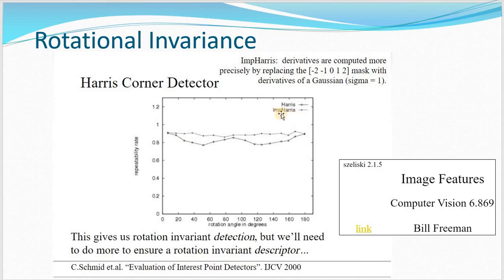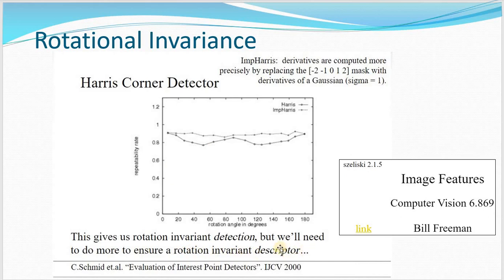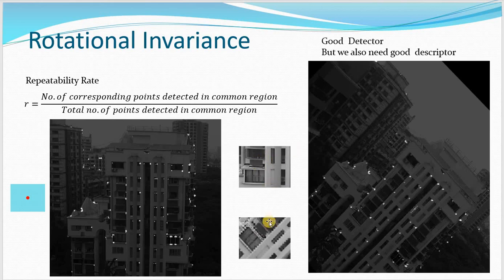There is also an improvised Harris detector. In improvised Harris, instead of using the normal Sobel edge detector, you use Gaussian derivatives — a mask with derivatives of Gaussian having sigma 1 — and that gives a better result. For improvised Harris the results are even more than 85% for most angles. However, this shows that while detection is rotationally invariant, you still need a rotationally invariant descriptor, because pixel values alone will give you wrong information that two patches are not the same when in reality they are.